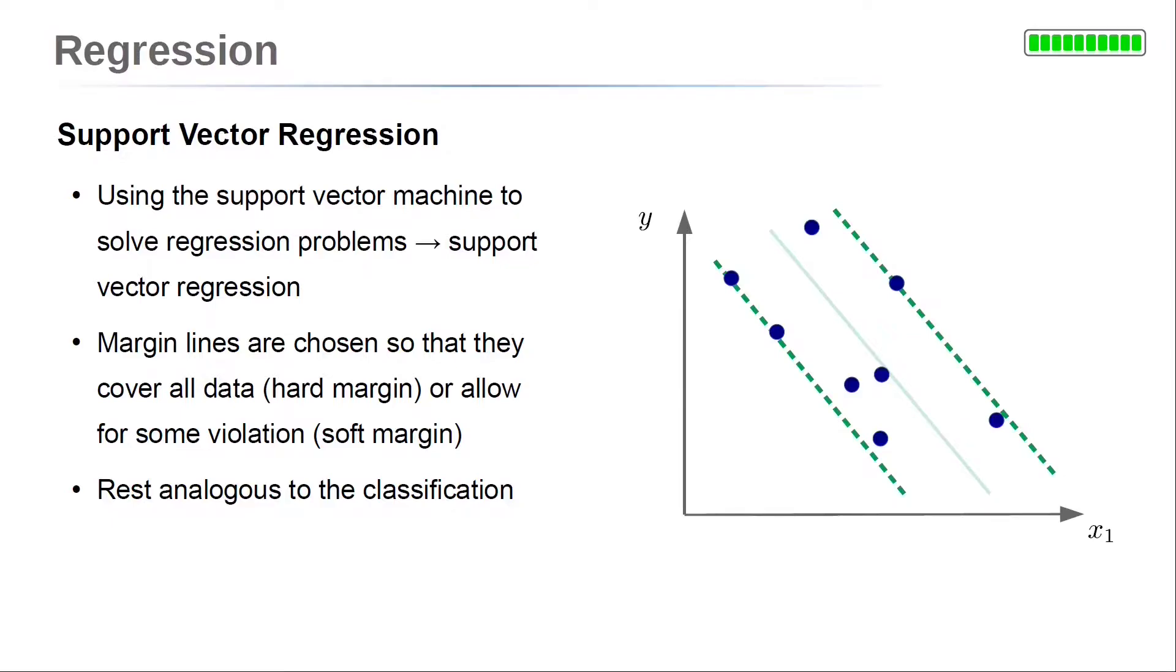The boundary, geometrically in the middle of the margin, is our regression model used to estimate the y-values for given x-values. So the boundary gives our model function. Similarly to classification, we can use soft margins for regression as well. This means we can allow a few data points to be outside of the margin.